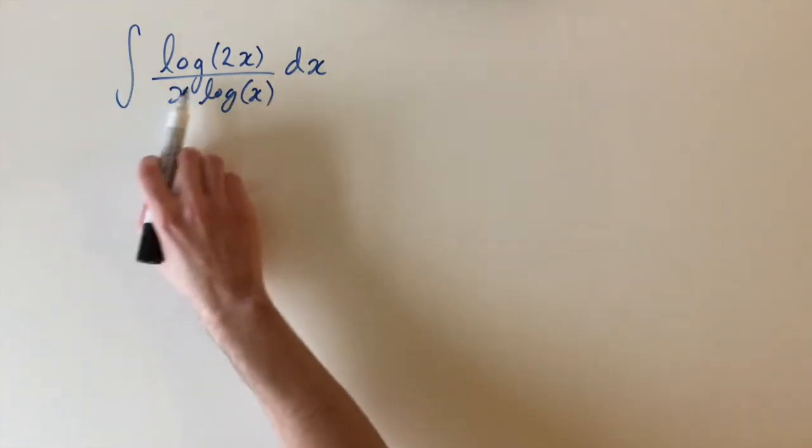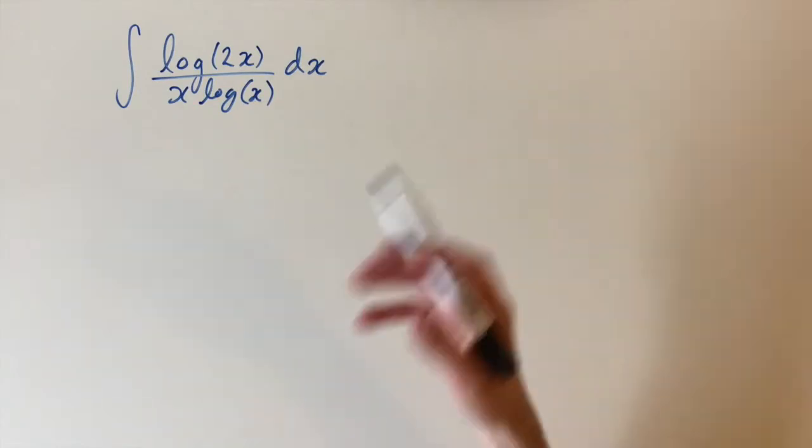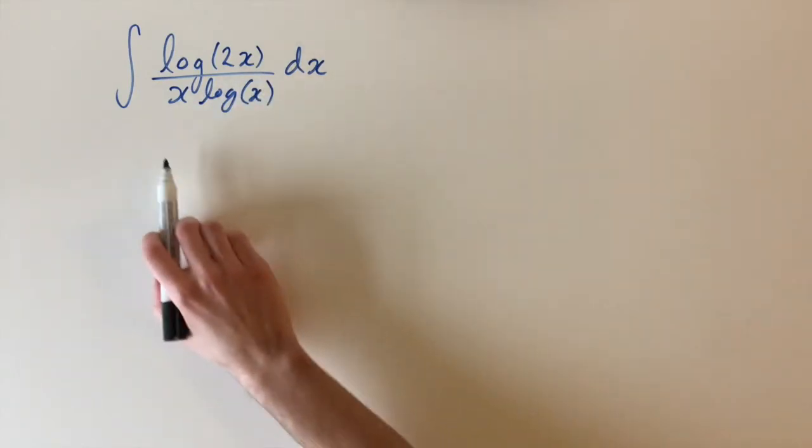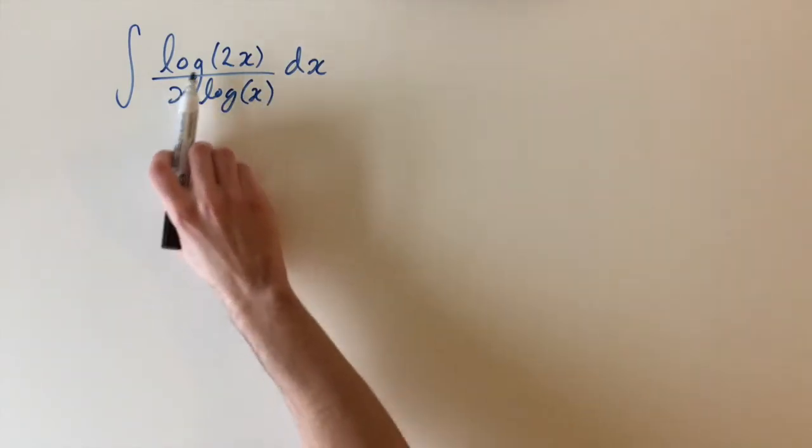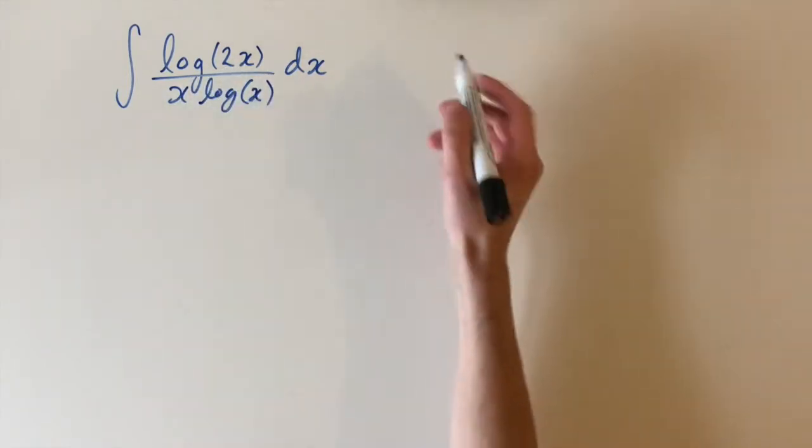So we have the integral of the logarithm of 2x divided by x log x dx. And as the first step, we can look at trying to simplify the numerator. So we can use the law of addition for logarithms to split this as log of 2 plus log of x.